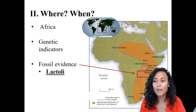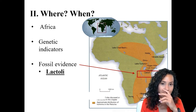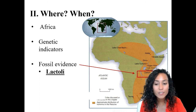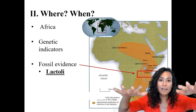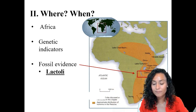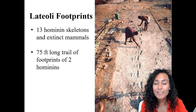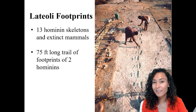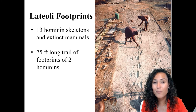Another line of archaeological evidence from this region of Africa comes from Tanzania, particularly the Laetoli site. These early discoveries were identified by Mary Leakey in 1976. Leakey found 13 hominin skeletons and extinct mammals, all preserved in a giant layer of ash from a volcanic eruption. Leakey also documented a 75-foot-long trail of footprints with well-defined arches and a distinctive heel-to-toe print made by upright-walking individuals, likely about four feet tall — about the same size as Lucy — dating to about 3.6 million years ago.